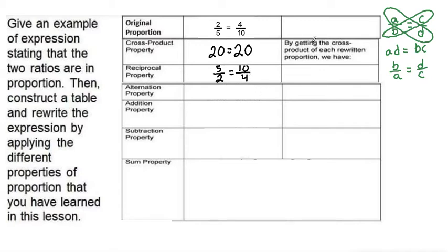We want to verify that this is still equal to each other by getting the cross product property in this column now. So we multiply the 4 by the 5, which makes 20, is equal to 2 times 10, which is also 20. So that's verified that this reciprocal property is still equal to each other.